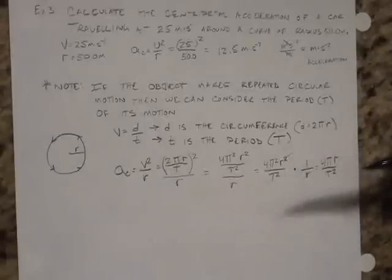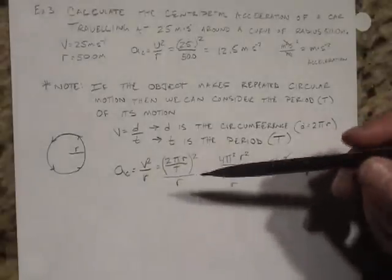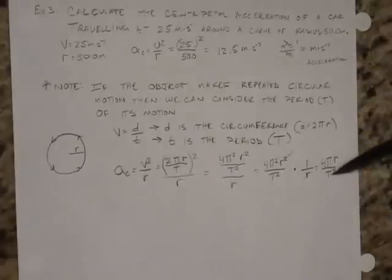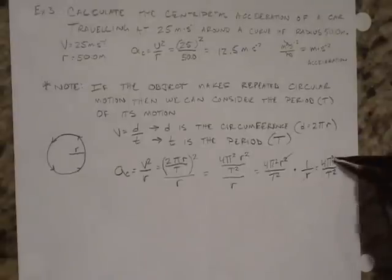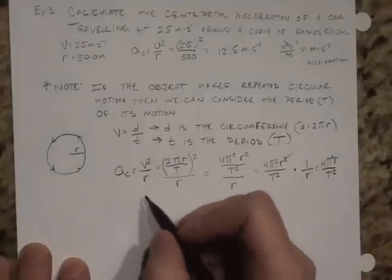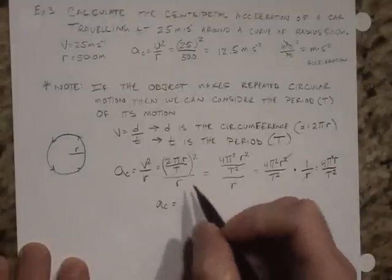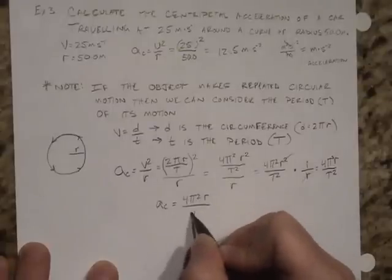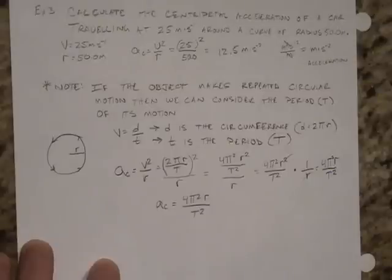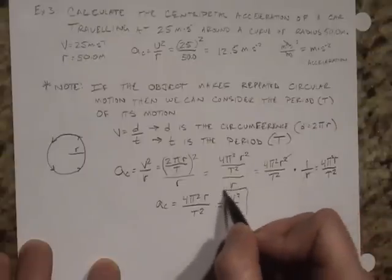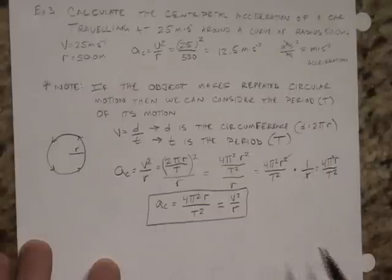We did this because we wanted to get rid of the velocity and get a new expression for centripetal acceleration based not on speed, but on the time it takes to go around. We no longer have velocity in the equation. The centripetal acceleration is simply 4π² times r divided by the period squared. This allows us to write a new version of the equation. And of course, we always have the original version, which is v squared over r. Both of these accelerations point in towards the center of the circle.